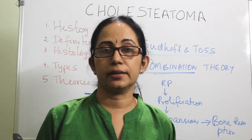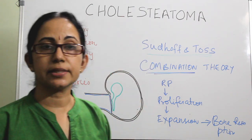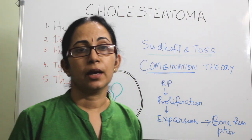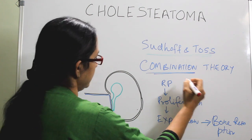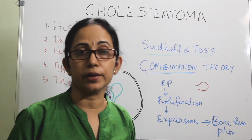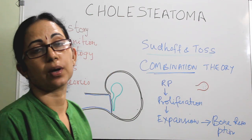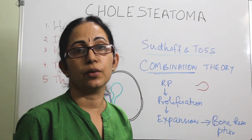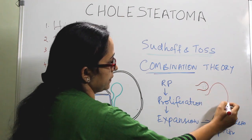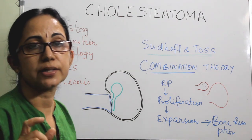The widely accepted recent theory is the combination theory proposed by Sudhoff and Toss, which states that first a retraction pocket forms — more commonly in the attic and posterosuperior marginal areas. The debris collects due to failure of self-cleaning, undergoes repeated bacterial infection and biofilm formation, expands through proliferation of squamous debris, and ultimately leads to bone resorption. Toss also staged pars flaccida retraction into four stages.